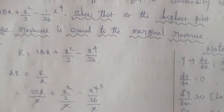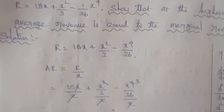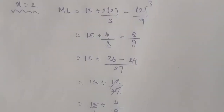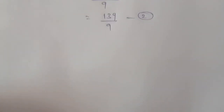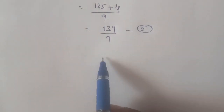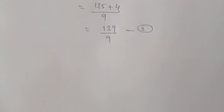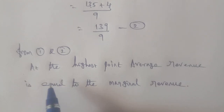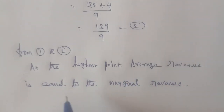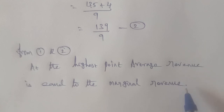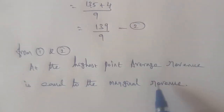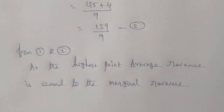Therefore, at x = 2, the average revenue equals 139/9 and the marginal revenue also equals 139/9. Hence, at the highest point, the average revenue is equal to the marginal revenue. This completes the proof. Thank you.